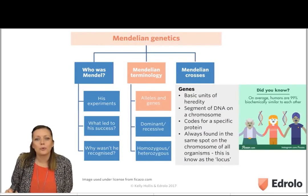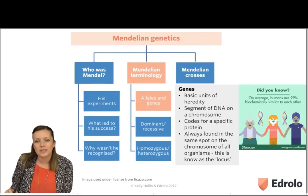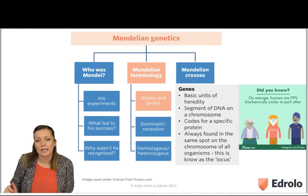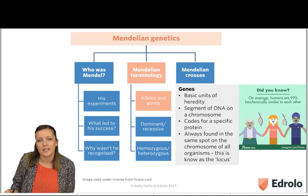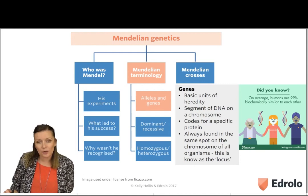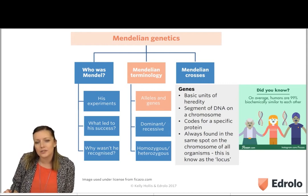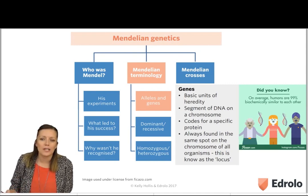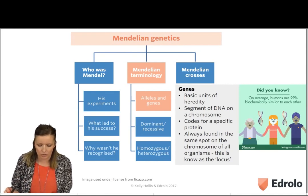Now that we're finished looking at who Mendel was, we're going to look at some terminology that we need to understand in order to move forward with our understanding of genetics. To start off, we're going to look at two terms called genes and alleles, and we need to be able to distinguish between the two of them and use examples, which is what the syllabus is asking us to do.